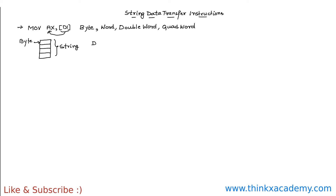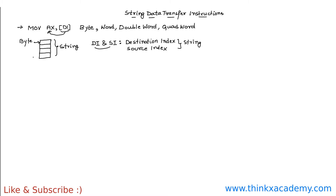One very important thing before starting with the string data transfer instructions: we will have to revise the concept of DI and SI registers. We have already studied about these registers in the very first section of this playlist. DI and SI registers are also known as the destination index and the source index registers. DI stands for destination index and SI stands for source index.